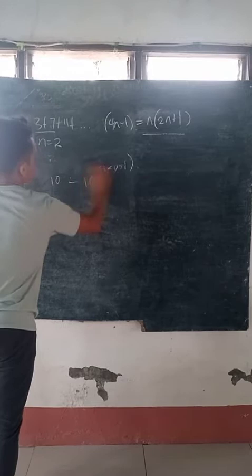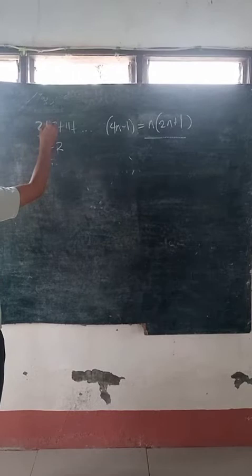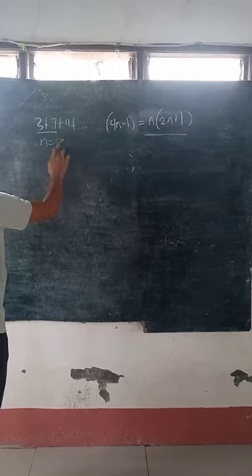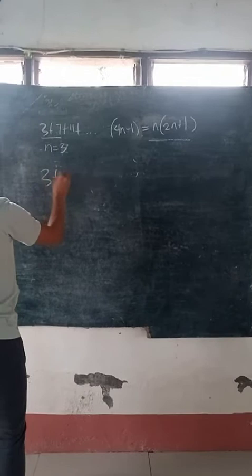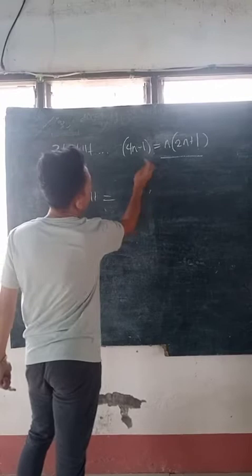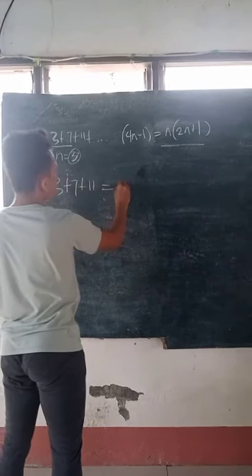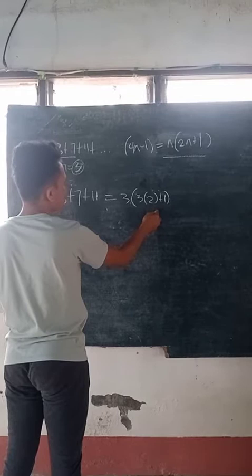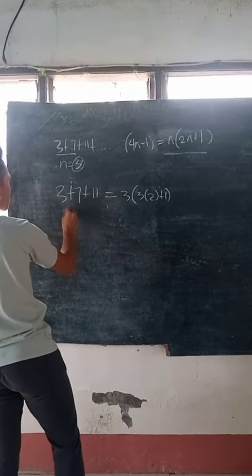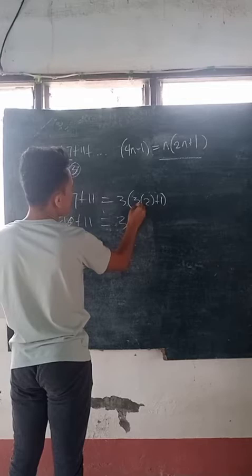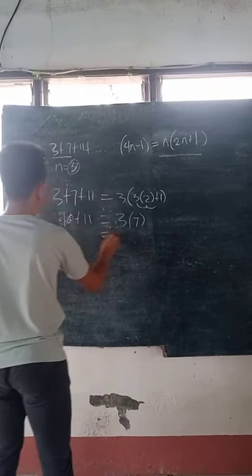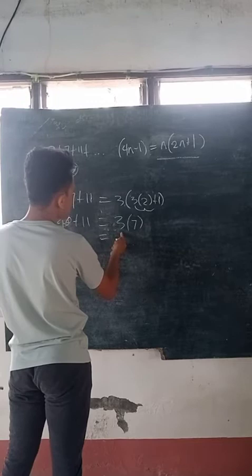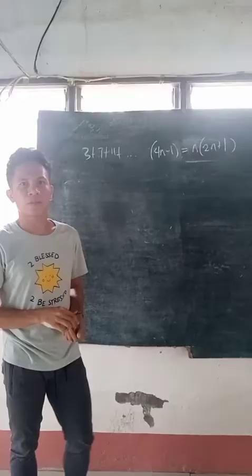And the third term: 3 plus 7 plus 11 is our third term, so our n is 3. So 3 plus 7 plus 11 is equal to our formula n times 2n plus 1. We substitute 3: so 3 times 3 times 2 plus 1. So 3 times 2 is 6, plus 1 is 7. So 10 plus 11 is 21, and 3 times 7 is 21. So it is true.